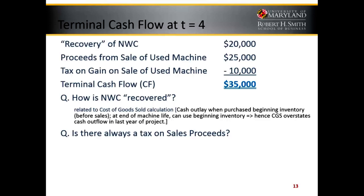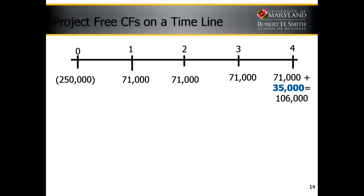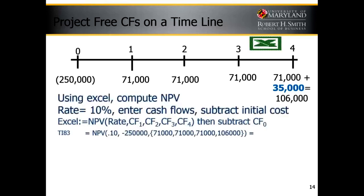Is there always a tax on sales proceeds? Only if we have a gain on sale. So our cash flows are $71,000 each year in operating cash flows and another $35,000 at end of project life, totaling $106,000 in year four. Using our TI-83, we would say that the net present value uses a rate of 10%, minus the year-zero cash flow of $250,000, then $71,000, $71,000, $71,000, and $106,000.